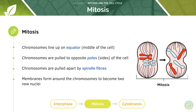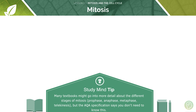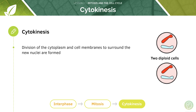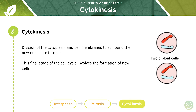Once the chromosomes have been pulled to opposite poles of the cell, two new nuclei have formed. New nuclei membranes have to be built around these nuclei so that they become two independent sets. This division of the nucleus into two marks the end of mitosis. We then have one final stage — cytokinesis — which is the division of the cytoplasm and cell membranes to surround the new nuclei, ultimately forming the two new daughter cells.